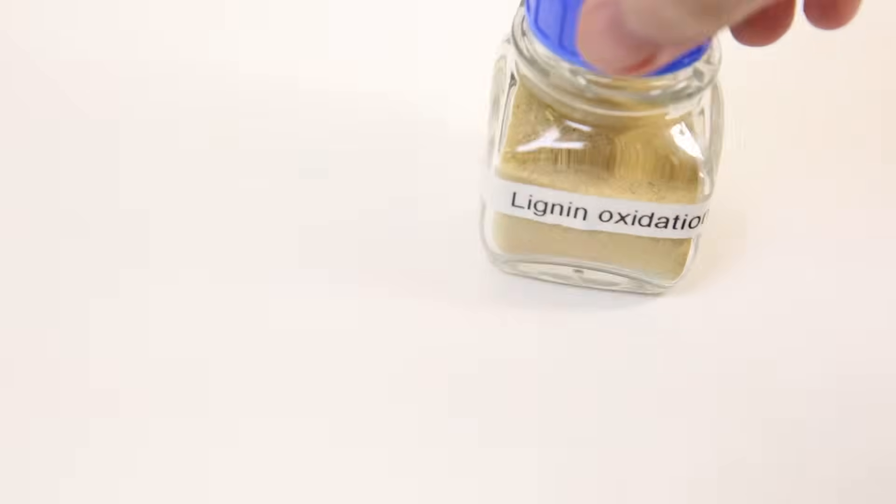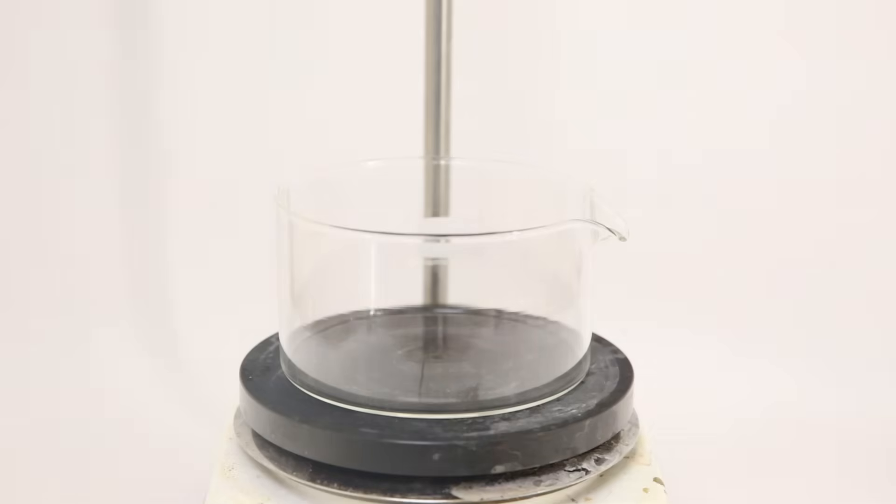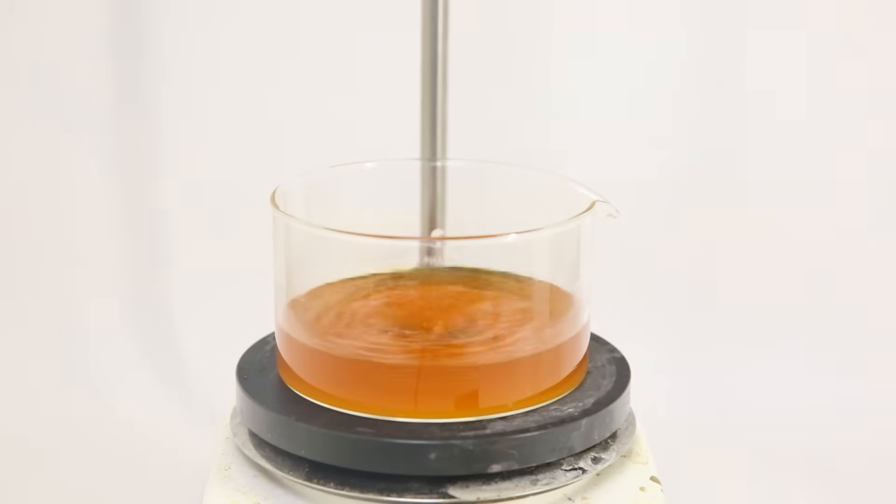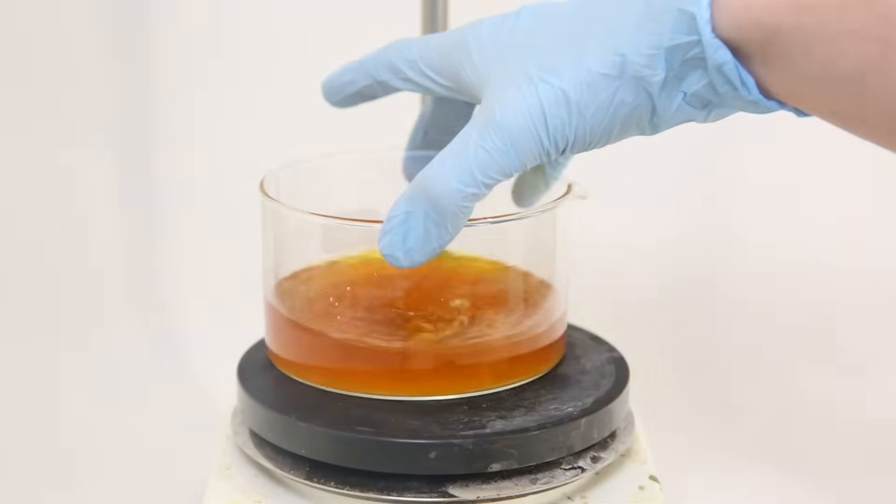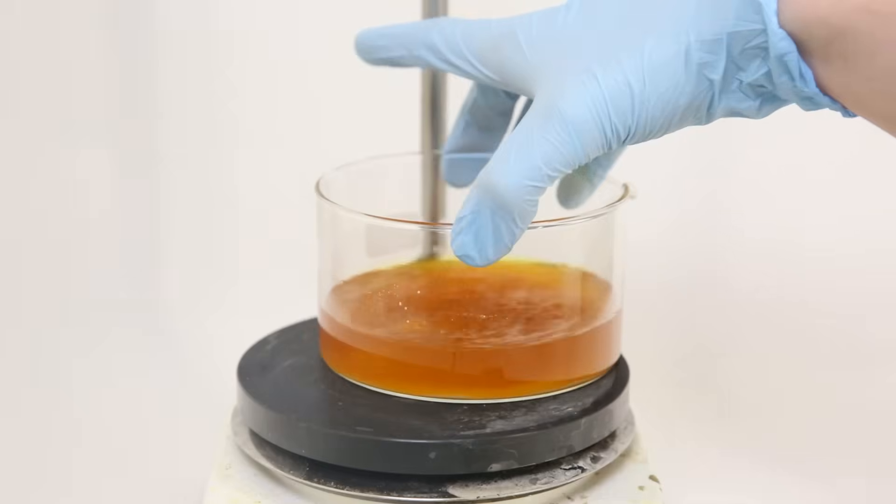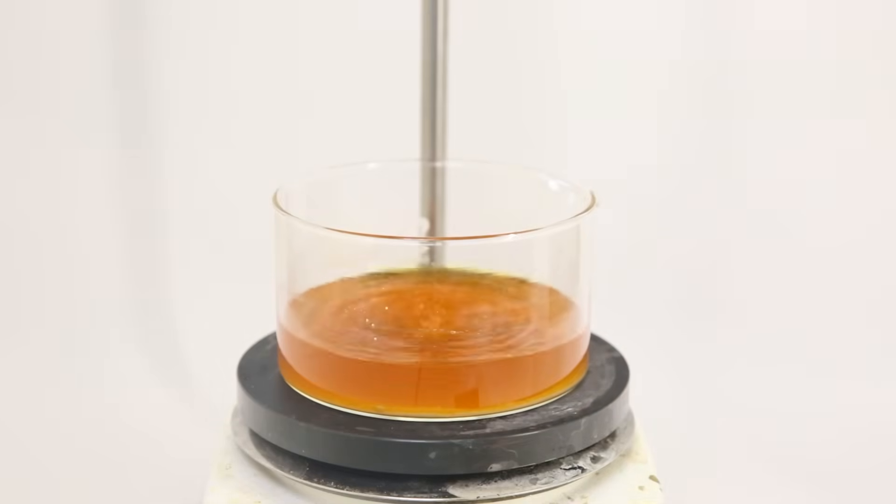Now to separate the vanillin and similar compounds from this mixture, I will take up the vanillin and similar compounds from this powder into acetone. So I dump part of the powder into a crystallizing dish and I add a bunch of acetone. Vanillin is very soluble in acetone, so it should dissolve the vanillin and similar compounds, while leaving behind compounds which are not soluble in acetone.